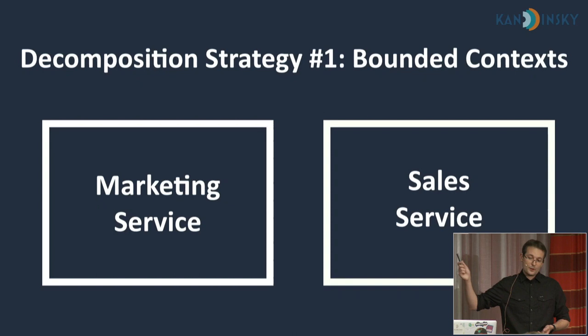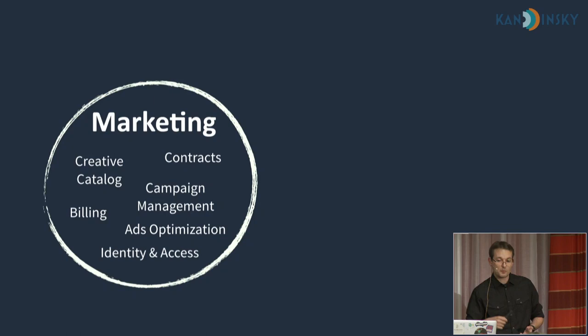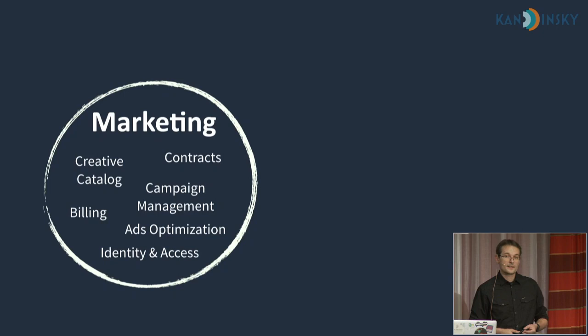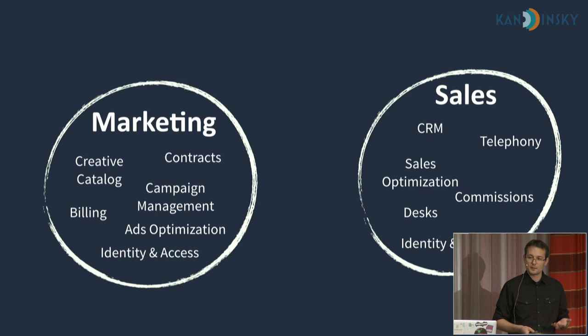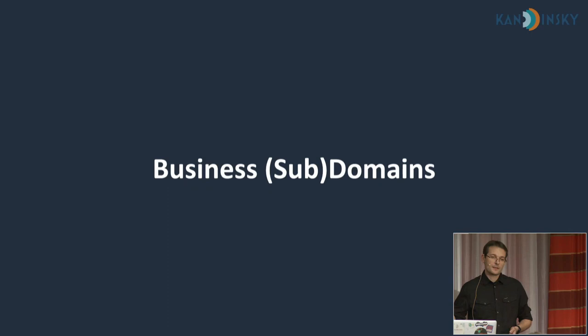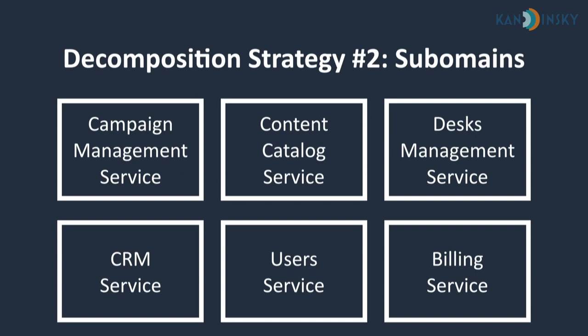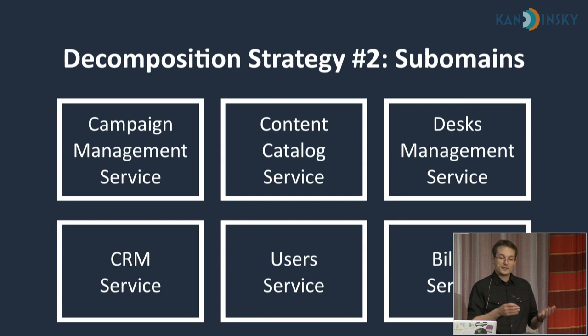However, these services represent pretty wide business areas. Bounded contexts can span multiple business domains. For example, in marketing we have creative catalog, contracts for managing relations with publishers, and campaign management. In sales we have CRM, desks, commissions, and others. We later divided those wide bounded contexts into smaller ones, each representing one business subdomain — ending up with services for managing campaigns, creatives, desks, etc. In our DDD community, many call for a one-to-one relation between business domains and bounded contexts.